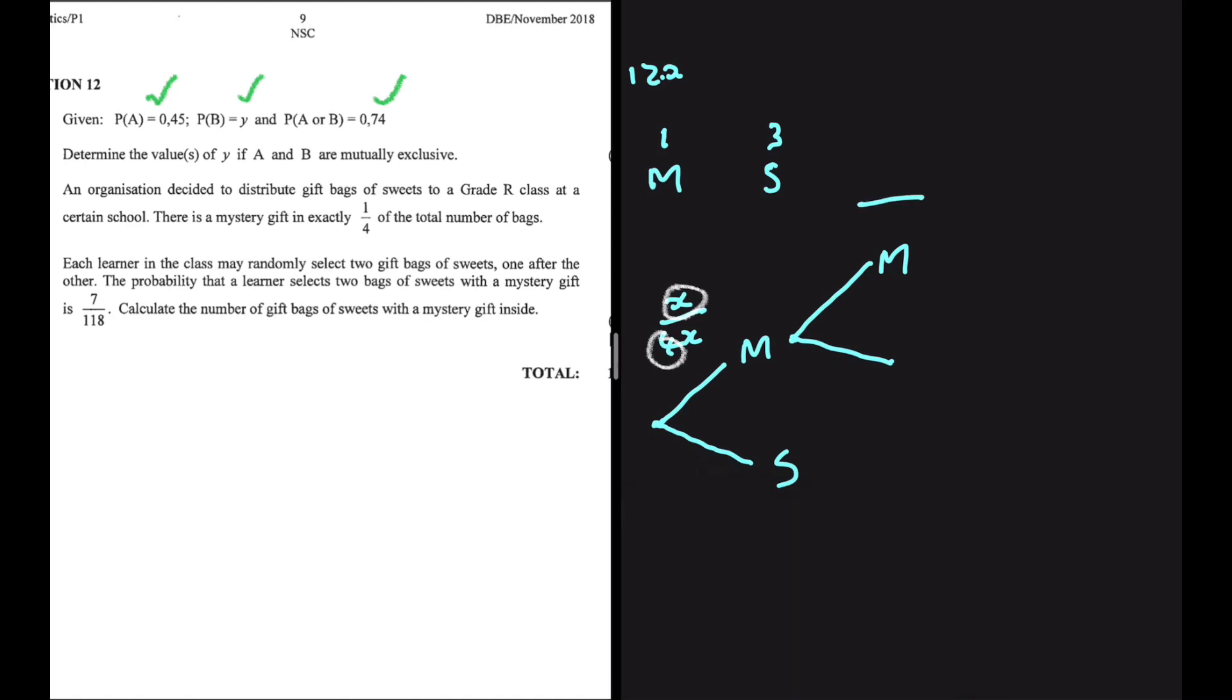The sample space is no longer 4X now. It is 4X minus 1 because we have already picked one bag. So we no longer have 4X bags but 4X minus 1. We don't have X mystery gifts anymore. We have X minus 1 because we have already selected 1.